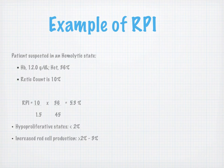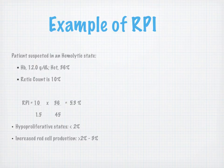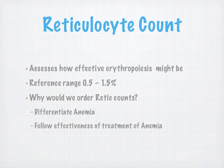Example: patient suspected in a hemolytic state — hemoglobin 12, hematocrit 36, retic count 10%. The reticulocyte count assesses how effective erythropoiesis might be, and we order a retic count to differentiate types of anemia and to follow the effectiveness of anemia treatment.